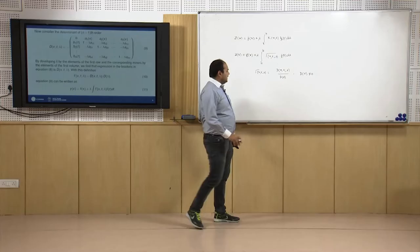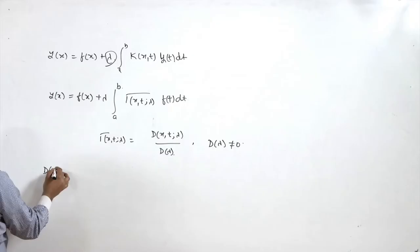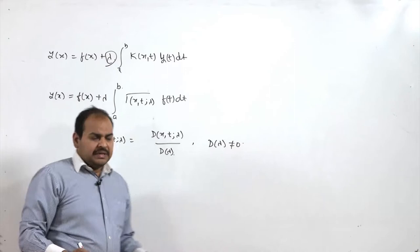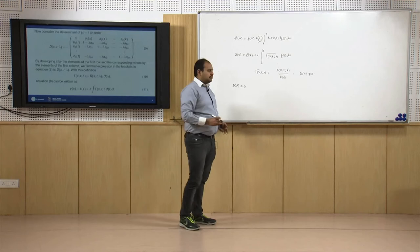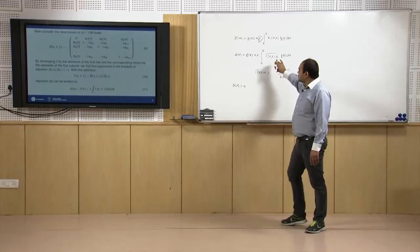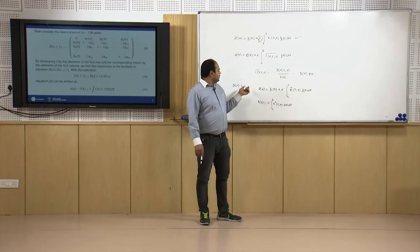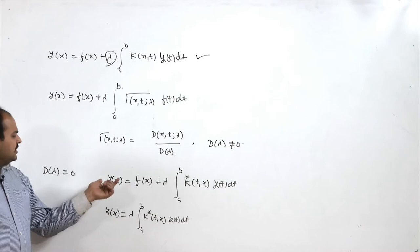Now the problem is that if d(λ) happens to be zero — that is, if the value of λ is a root of the coefficient matrix determinant d(λ) — then this solution is not defined and we have to find conditions on f such that we may still have a solution. We consider the transpose equation of the given equation.